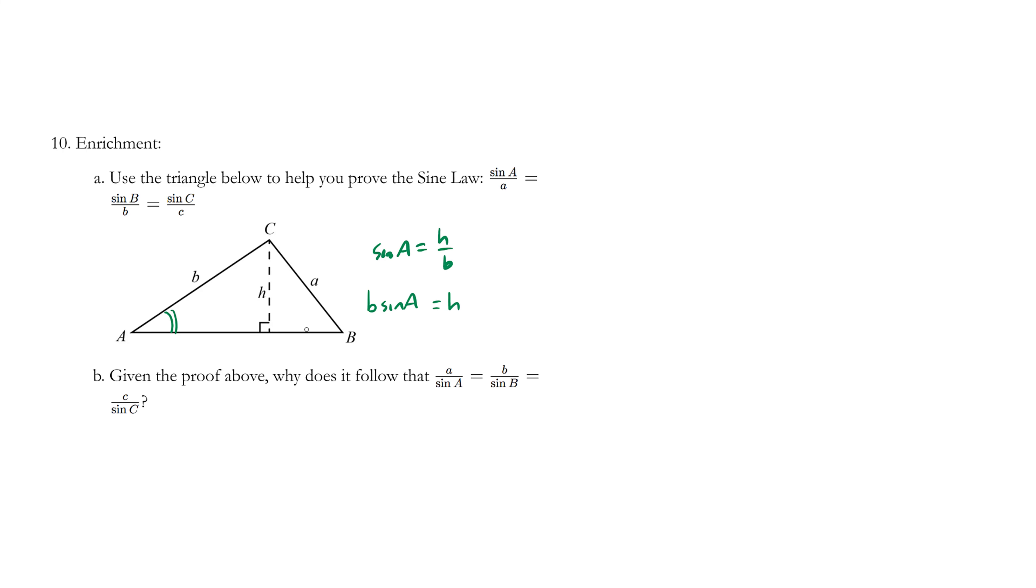Now let's focus on the triangle on the right, this is the right triangle. We're going to focus on B. Sine B is equal to opposite over hypotenuse, which is H over A. Multiply both sides by A, we have H equals A sine B.